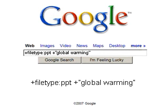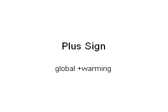On top of the filetype operator, I've used a plus sign. A plus sign in front of a term forces Google to restrict results to sites that absolutely must contain that term. If I search for 'global +warming,' that tells Google to find pages about global, but all of them must have the word 'warming.' The plus sign makes a term required in the results.